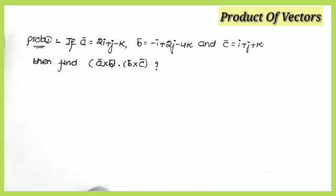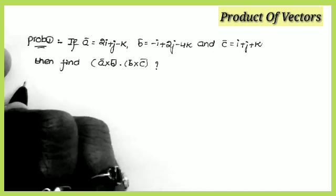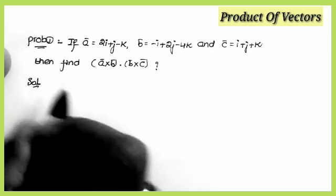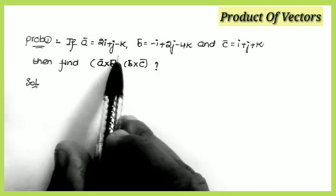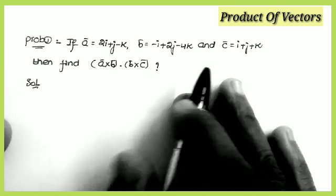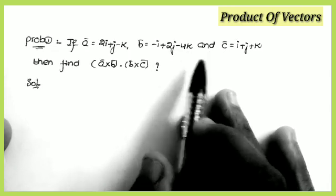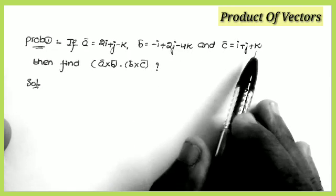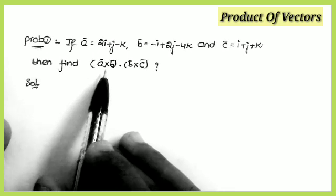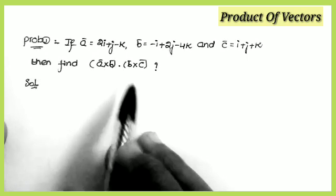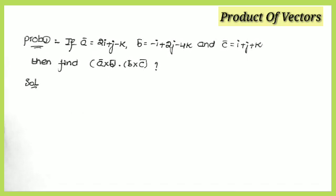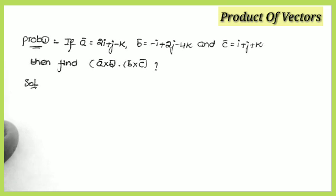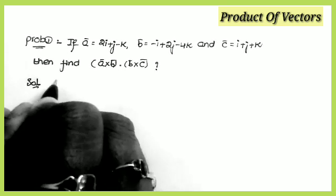Now I explain the product of vectors important questions. See the first problem: if a̅ = 2i + j − k and b̅ = −i + 2j − 4k and c̅ = i + j + k, then find the value of (a×b)·(b×c). This is a very easy but most important question — it sometimes comes for 4 marks or 7 marks.